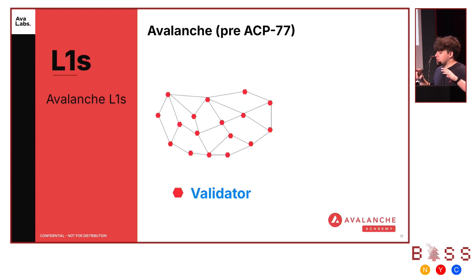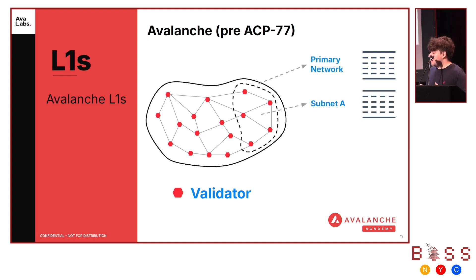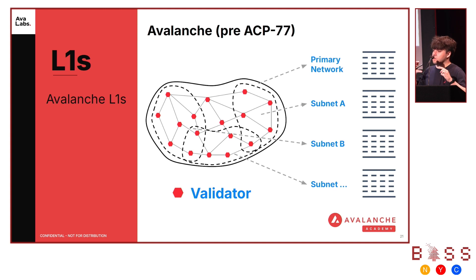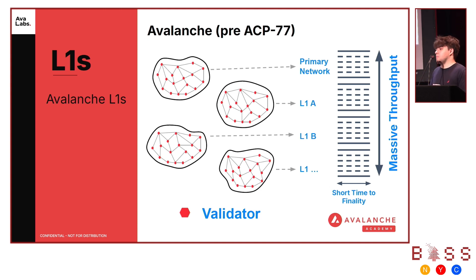Here are a couple of graphics to explain the Avalanche network — big shout out to Martin for putting this together. Currently, we have the primary network with subnet A and other subnets all commingled within the core primary network, sharing resources across multiple nodes. After ACP77, we are separating out these different Layer 1s so they don't have that core overlap. We still maintain easy interoperability and fast messaging, but we've fully separated the network to be more isolated amongst the different chains.